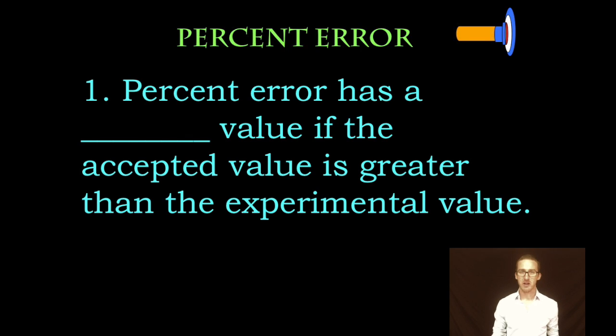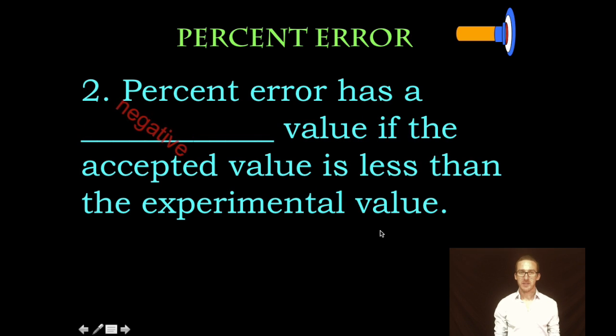Okay, now as you take a look at the formula on your formula chart, as you consider what percent error is all about, you should recognize then that you could potentially have positive values or positive percent errors. In this case, just means that the accepted value will be greater than the experimental value. And then keep in mind that percent error can have a negative value if the accepted value is less than the experimental value.